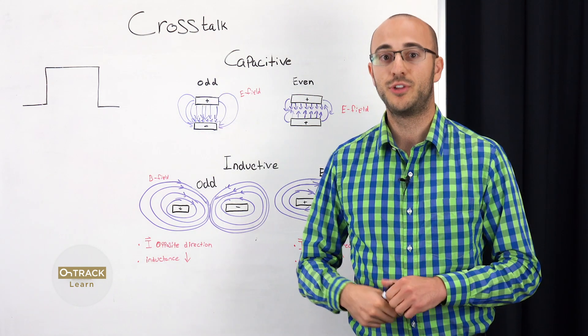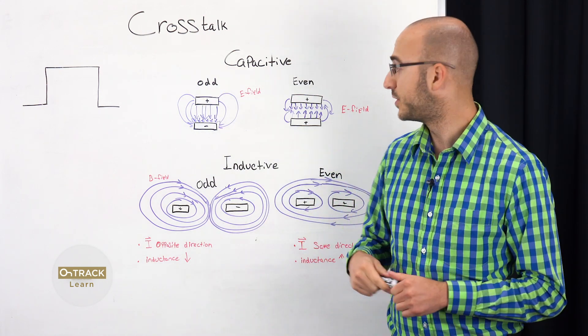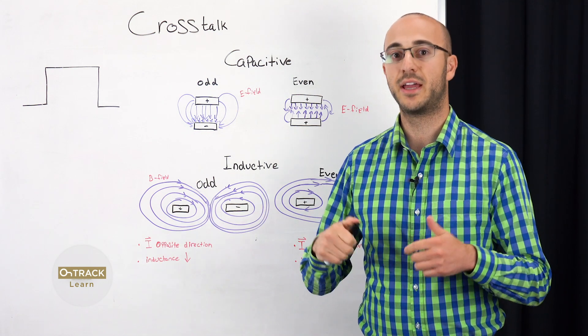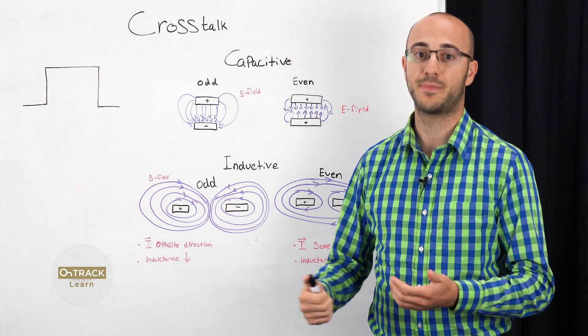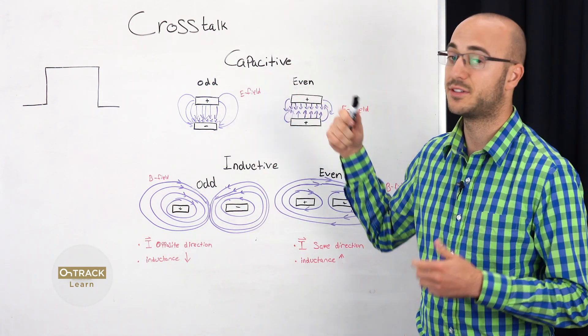So, odd mode, when they're out of phase, you have a higher potential difference between these two traces. And due to that potential difference, you have higher capacitance and higher capacitive crosstalk.